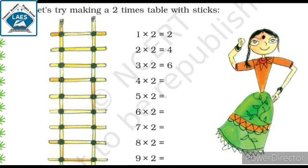Let's try making a 2 times table with sticks. Now you have to arrange the sticks. You have to arrange the sticks like a ladder. Like 1×2, 2×4, 3×6, then 4×8, 5×10, 6×12, 7×14, 8×16, and 9×18. Okay students?